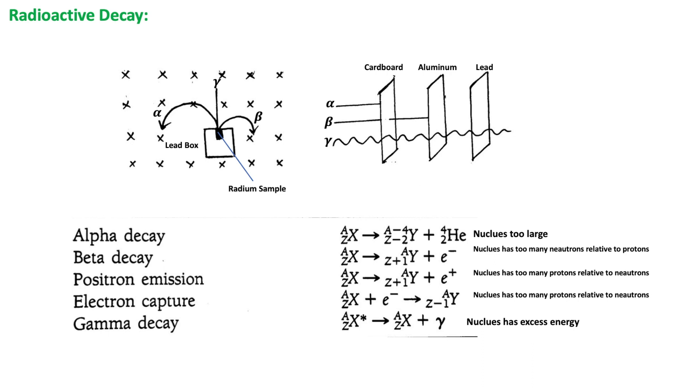The energy liberated during radioactive decay comes from within the individual nuclei without external excitation, unlike the case of atomic radiation. This is possible because of the equivalence of mass and energy, as shown by Einstein's equation.